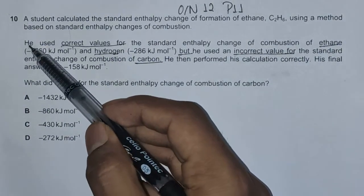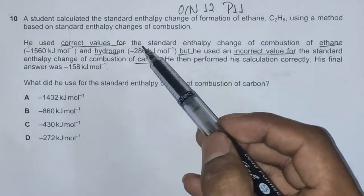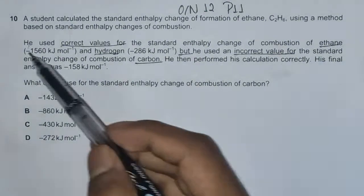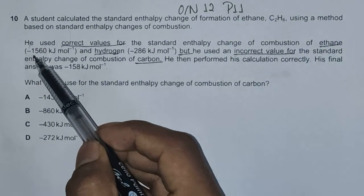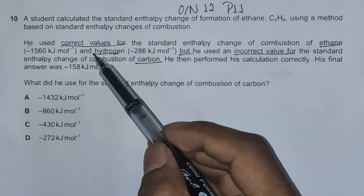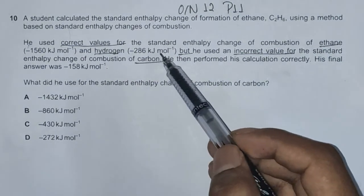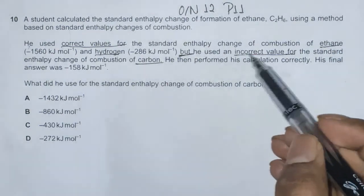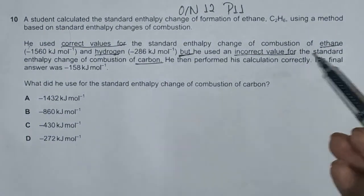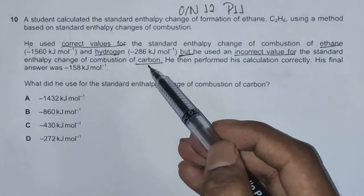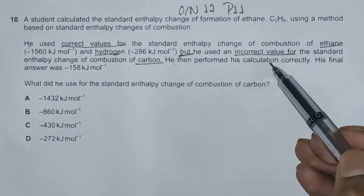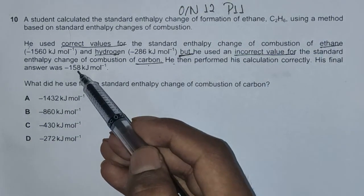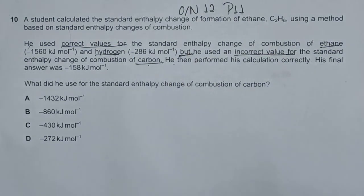The question continues: he used correct values for standard enthalpy change of combustion of ethane, minus 1560 kilojoules per mole, and hydrogen, minus 286 kilojoules per mole. But he used an incorrect value for the standard enthalpy change of combustion of carbon. He then performed his calculation correctly, and his final answer was minus 158 kilojoules per mole.